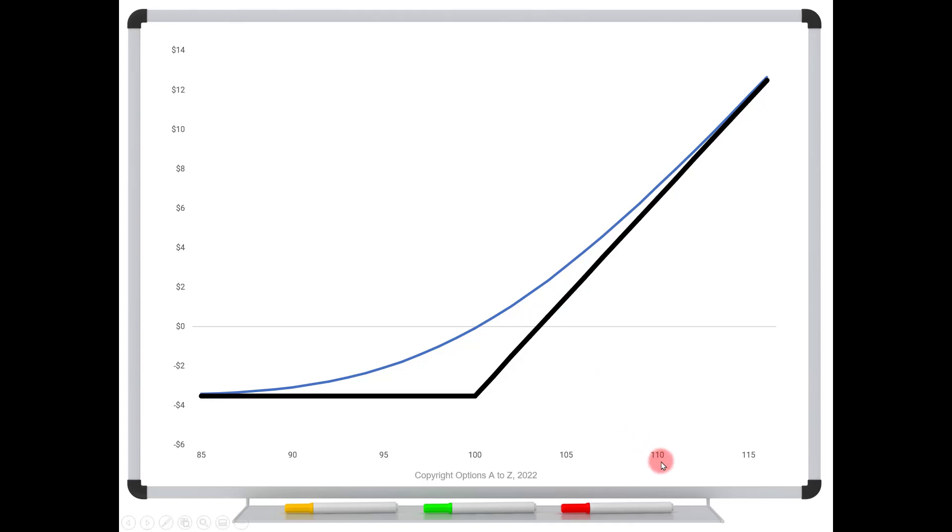And so what if the stock is at $110? Find $110, trace a line up to the blue line, and it shows that you're going to be worth just under $7.